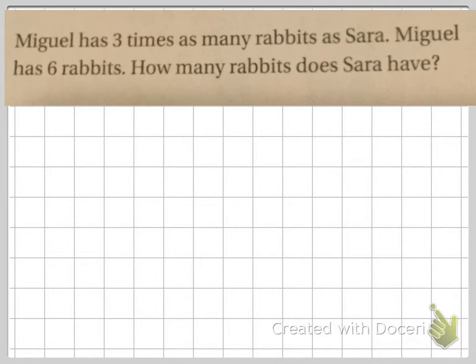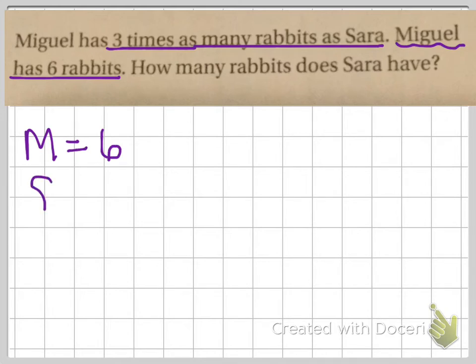Miguel has 3 times as many rabbits as Sarah. And right here it tells us that Miguel has 6 rabbits. Miguel has 6 rabbits. Sarah, we are solving for Sarah. We don't know how many she has. But we do know that Miguel has 3 times as many as she does.